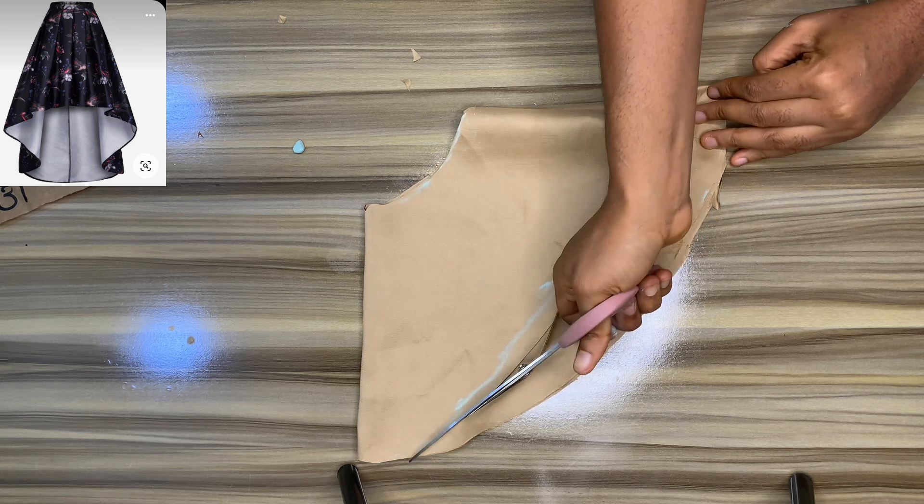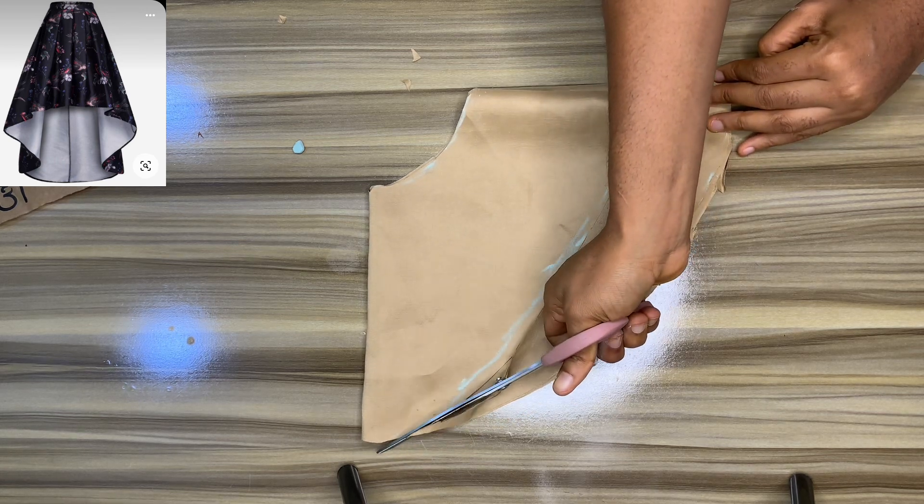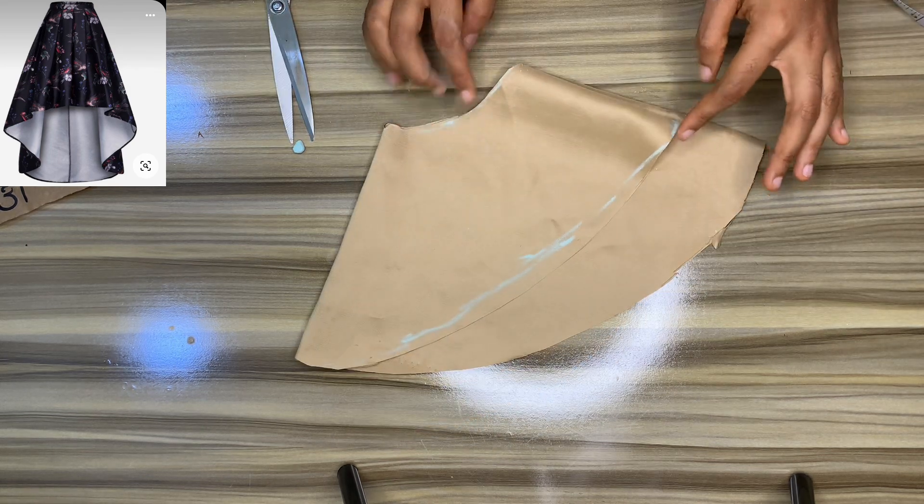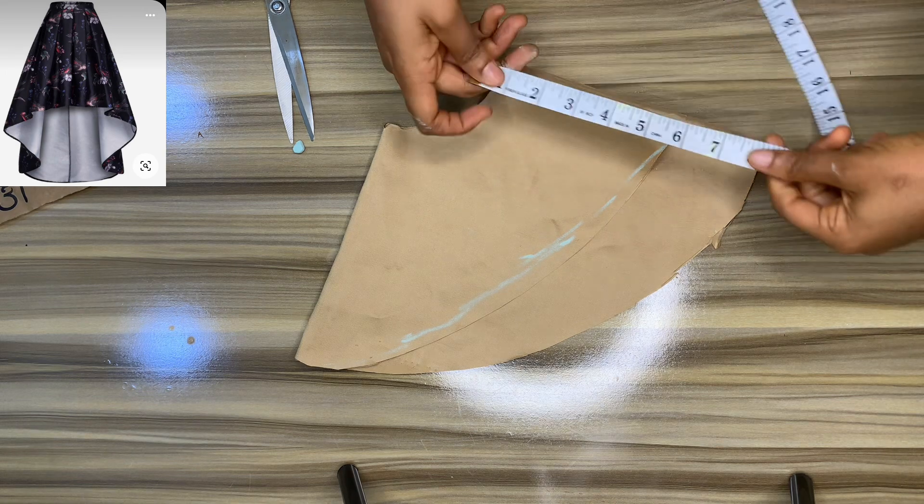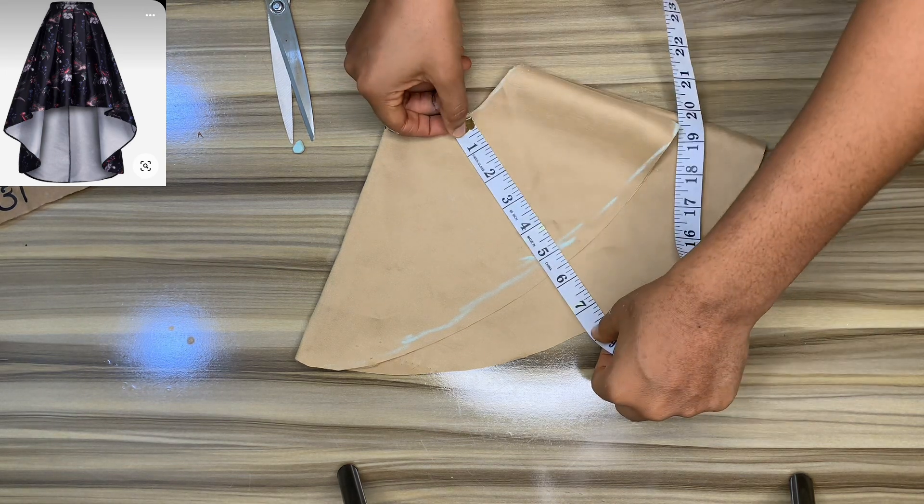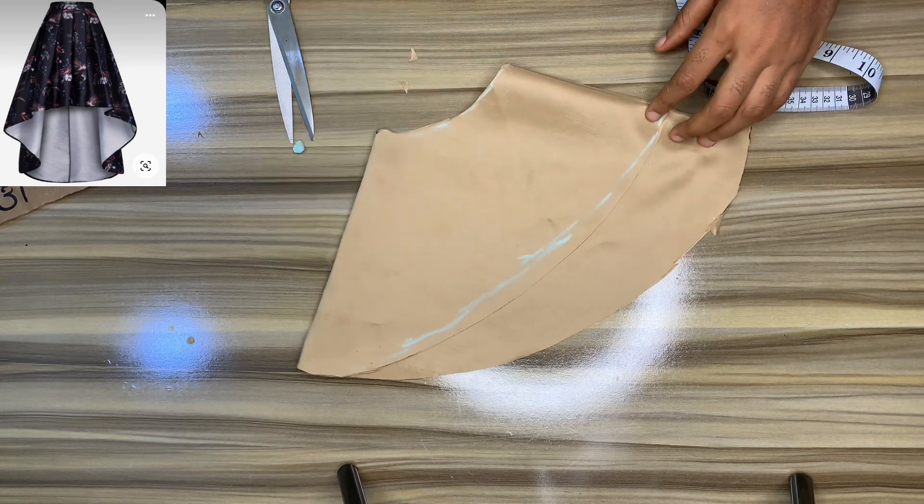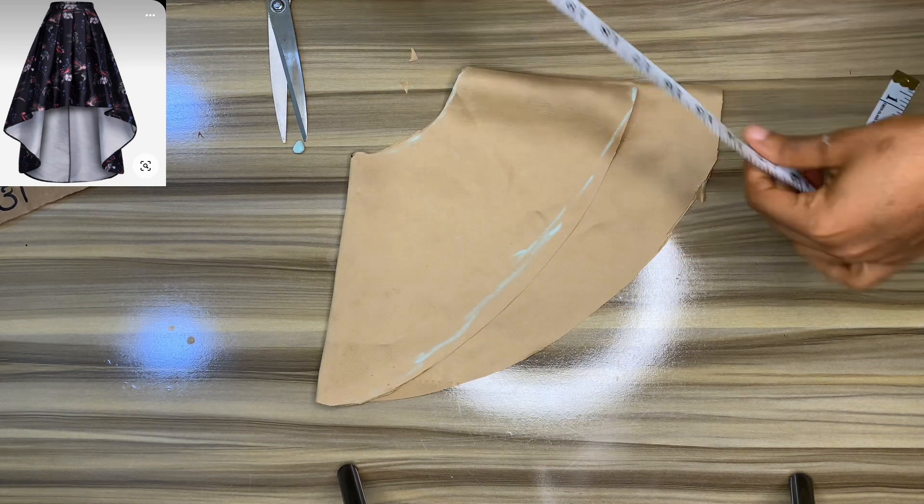Can you see the upper part is shorter than the longer part? That upper part is going to be our front, five inches. I'm going to trim out the excess because it's more than five inches.